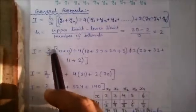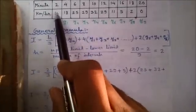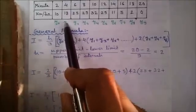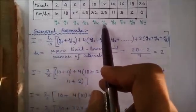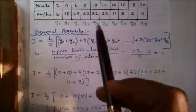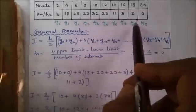So I equals to 2 divided by 3 into y0 plus yn plus 4 into all odd y values (18, 29, 29, and 5) plus 2 into all even y values (that is 25, 32, 11, and 2).